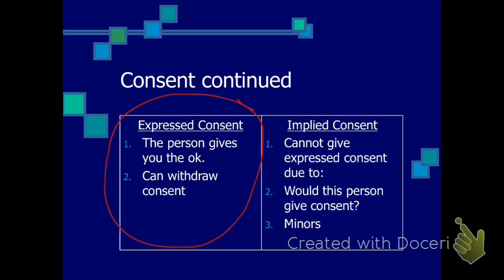If the patient is a minor, the law requires that the emergency medical responder obtain consent from a parent or guardian if one is available. Keep in mind that the patient has the right to withdraw consent for care at any time — if this occurs, step back and call for more advanced medical personnel. In order for a patient to give express consent, they must be competent. Competence means the patient must be able to understand your questions as well as the implications for accepting or refusing care. The emergency medical responder should always ensure the patient understands the condition and both the risks and benefits of the proposed treatment.